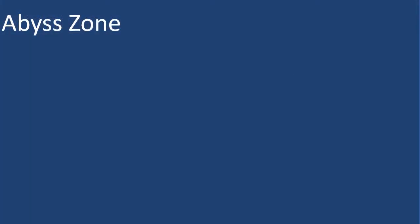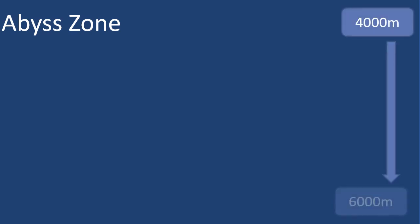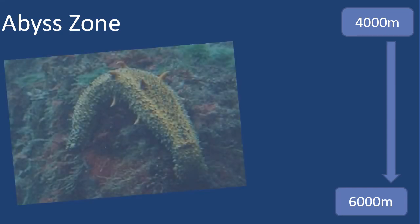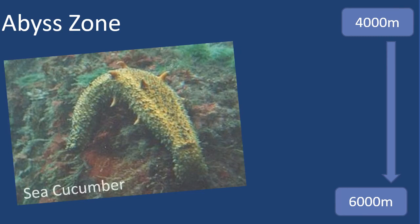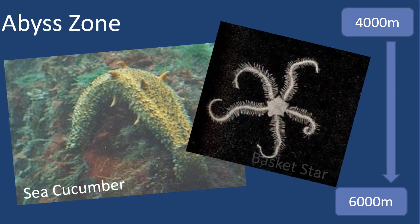The abyss zone begins at a depth of 4000 metres and goes down to a depth of 6000 metres. Few strange organisms can live this far below sea level, including the sea cucumber and the basket star. The water in this zone is near freezing and there is little oxygen, food, or nutrients.